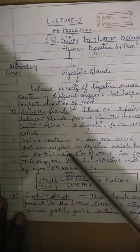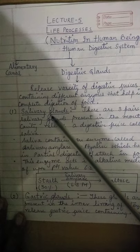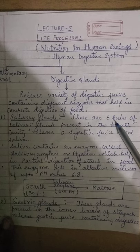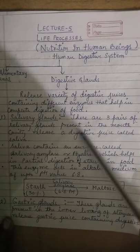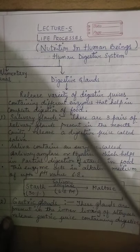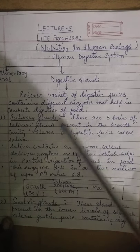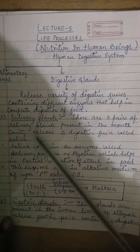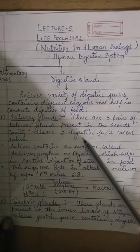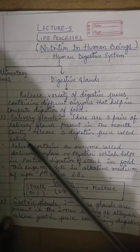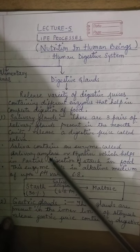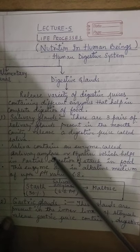There are several types of digestive glands. Number one: salivary glands. In human beings, there are three pairs of salivary glands present in the mouth cavity. These salivary glands release a digestive juice called saliva. In saliva there is an enzyme called salivary amylase, also known as ptyalin.